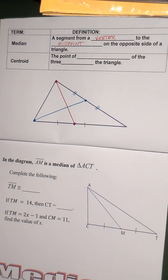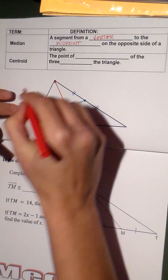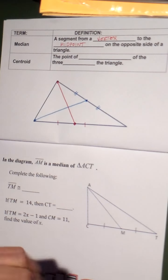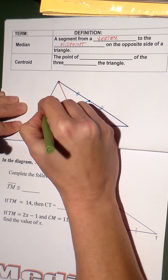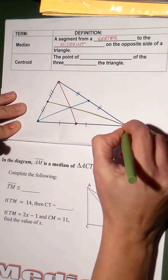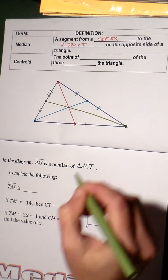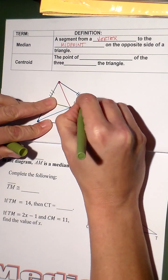Remember, all these special segments, you can draw three of them in each triangle. The third one, oh, I've already used red. Let's not do that again. So I'm going to draw my midpoint and go to my vertex. So those are your three medians, and this is where the three medians intersect, and that's called the centroid,